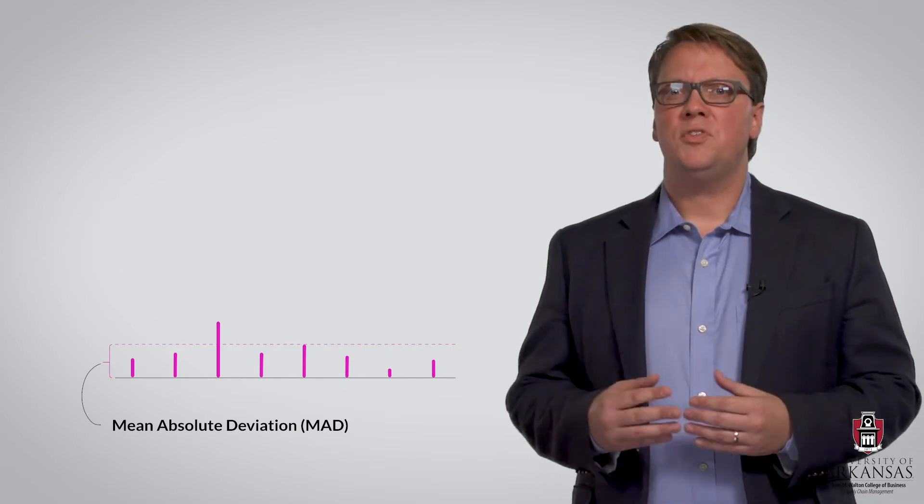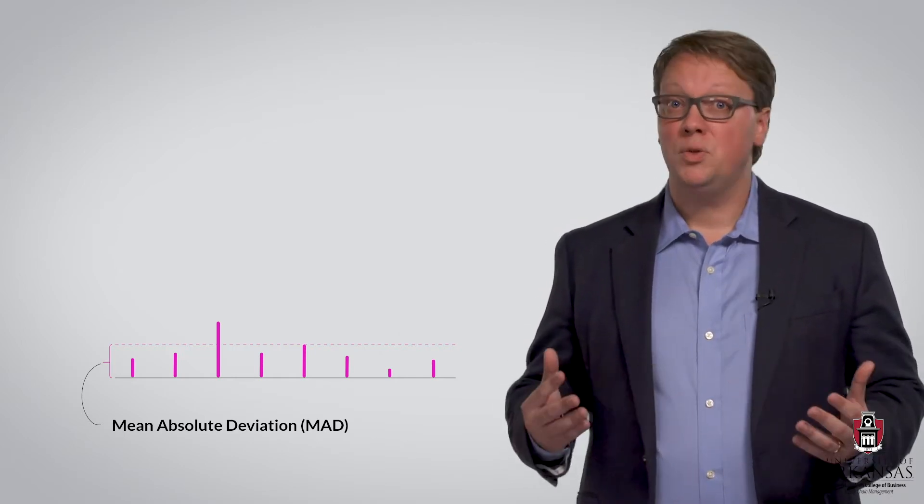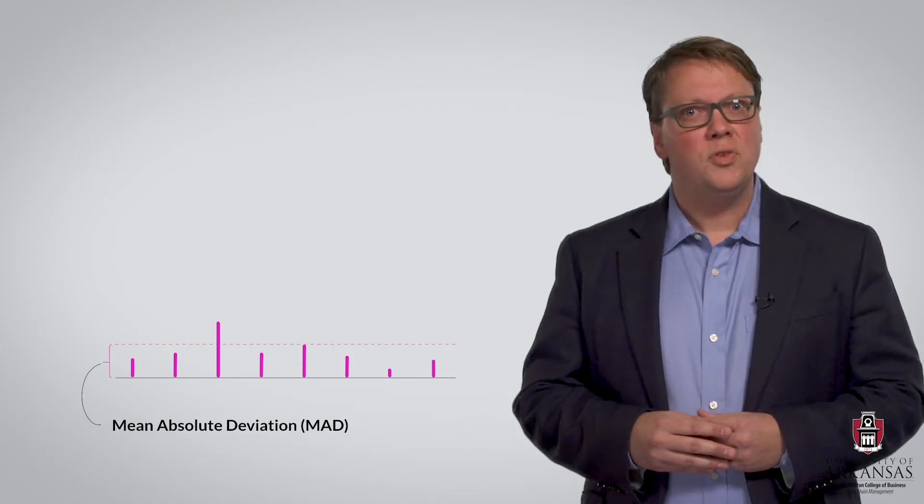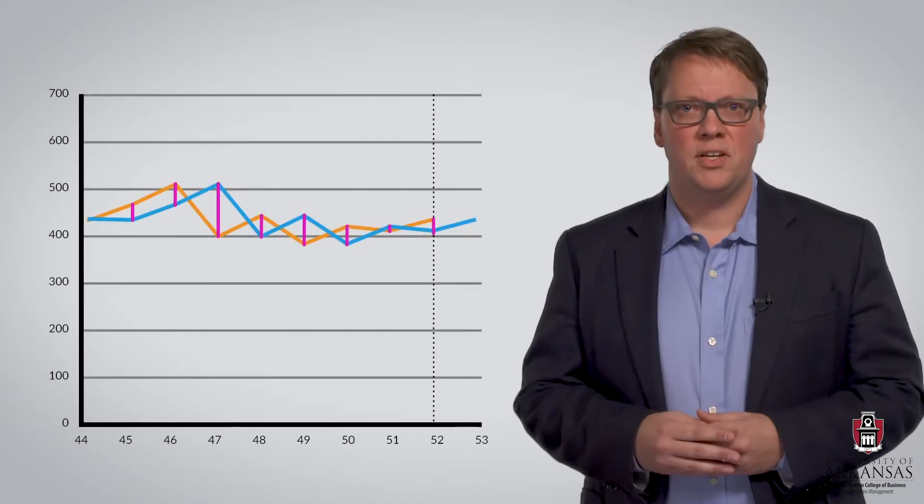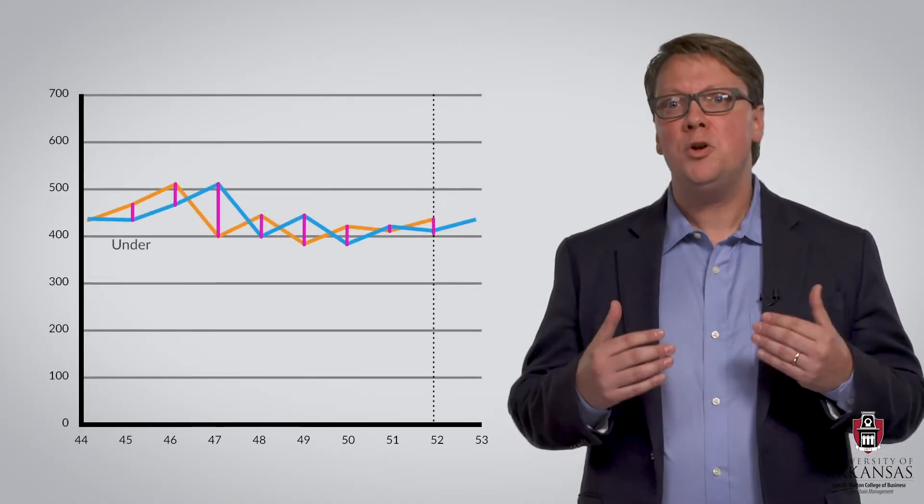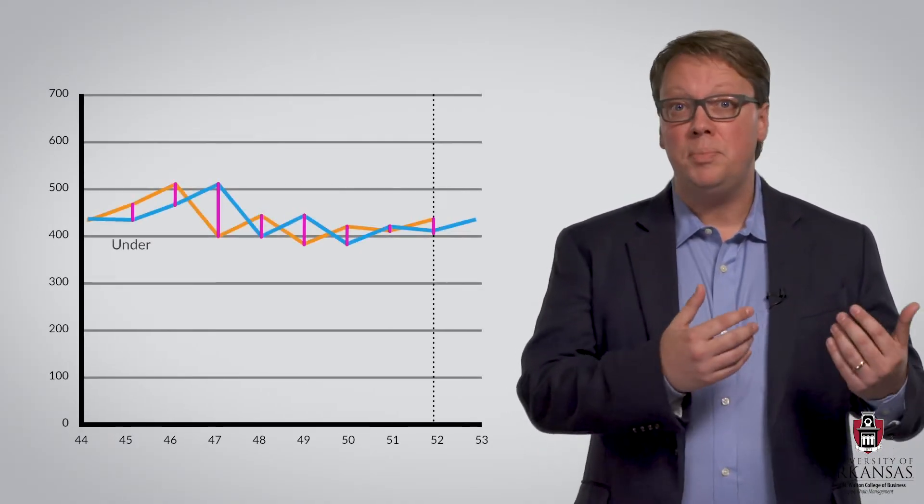Now that we understand the measurement of the magnitude of forecast errors, let's also take a look at the measurement of bias in forecasts. As we return to our data set, we can see that we underpredict the demand in period 45.